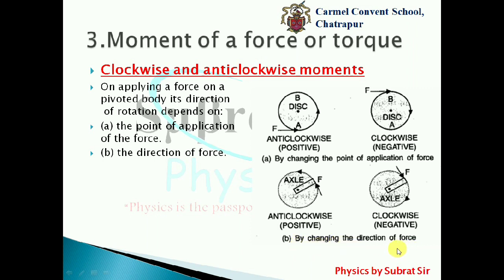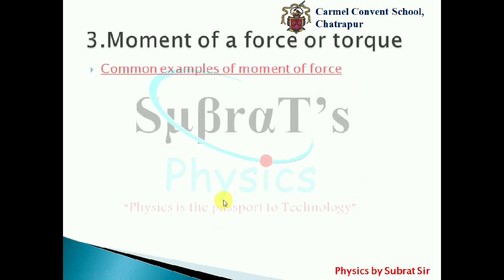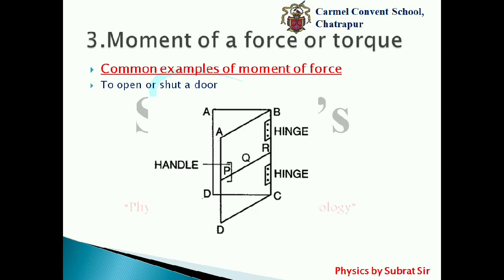By changing the direction of the force also, rotation can be anticlockwise or clockwise. Consider an axle: when you apply a force in one direction it rotates anticlockwise; when you apply a force tangentially, normal to the axle in the opposite direction, it rotates clockwise.